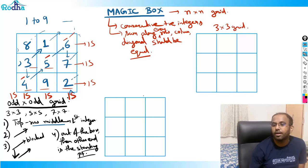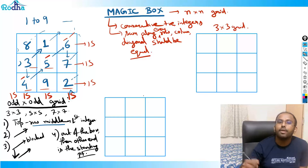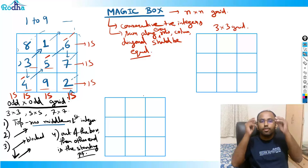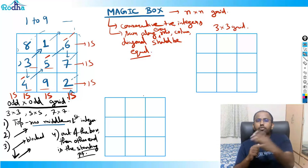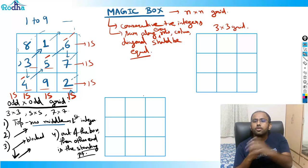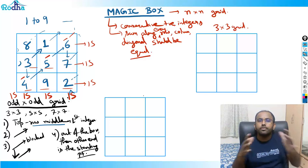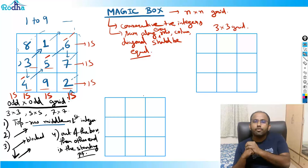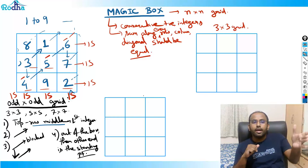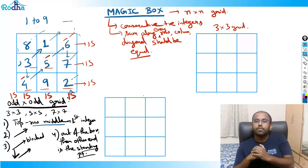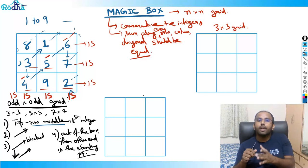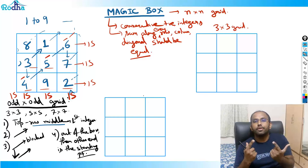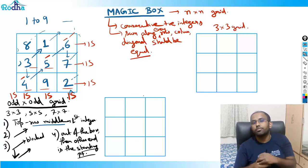Isn't this interesting? There's a CAT set on it. In one offline coaching in 2018, just one month before CAT, I was taking a workshop and my session finished 10 minutes early. In the last 10–15 minutes, just for fun, I taught this magic box — and you won't believe it was asked in CAT! People messaged me saying they solved that set in just 2 minutes.